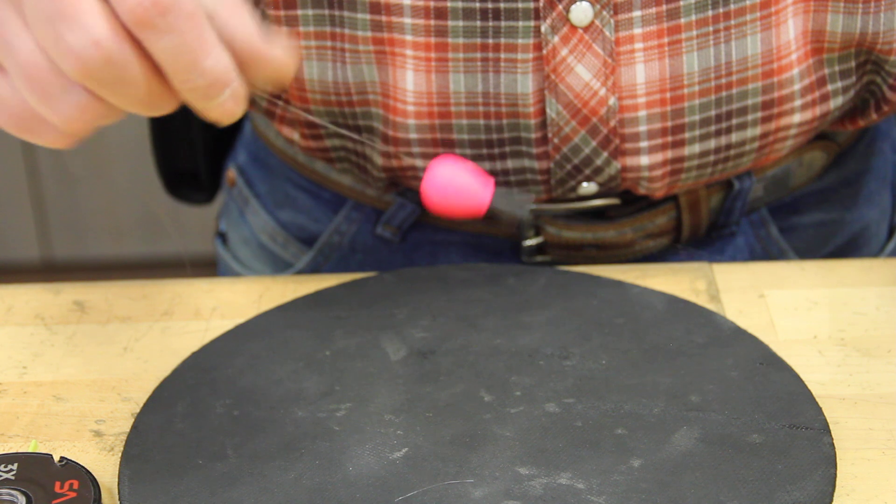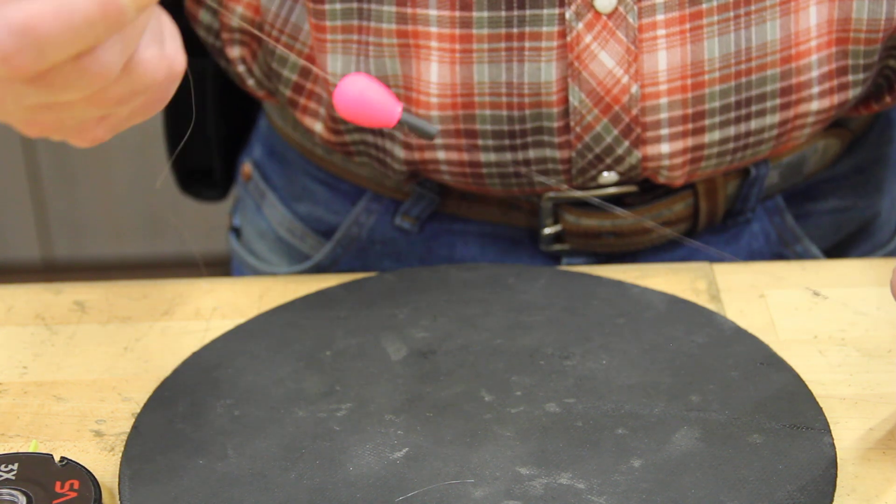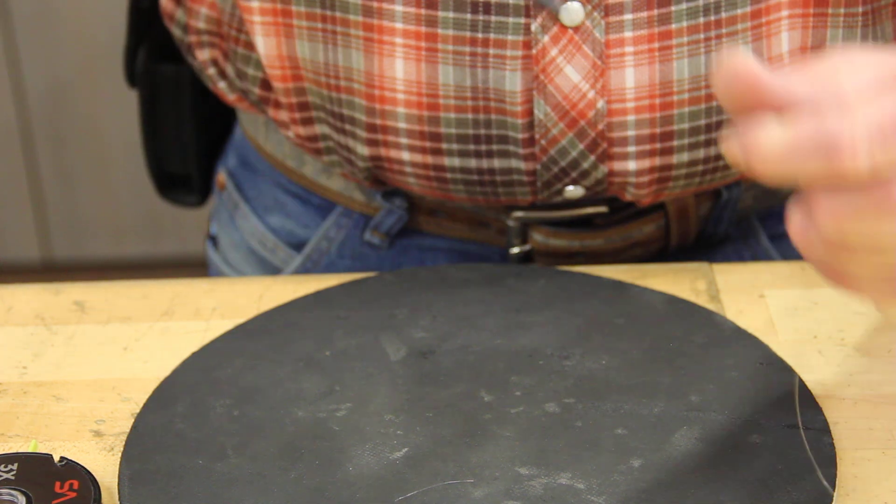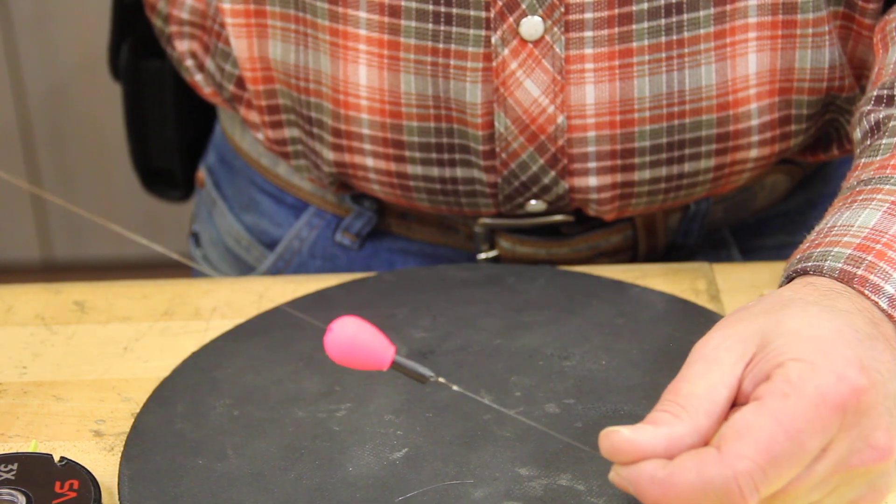Anyways, when you hook a fish at 12 feet, it's going to be hard to get him in. The design of this is, when you strike, it pops loose.